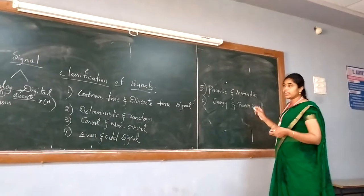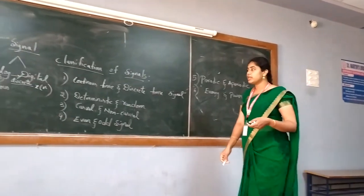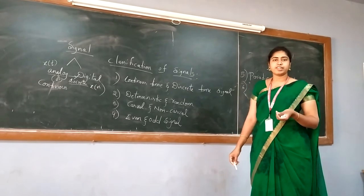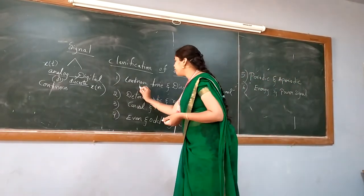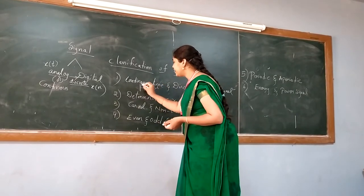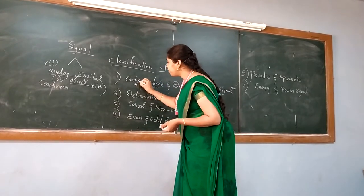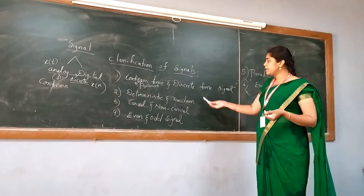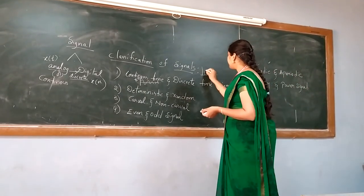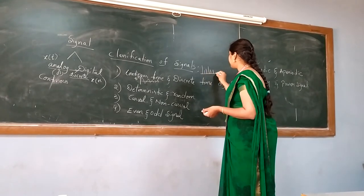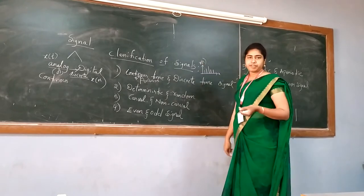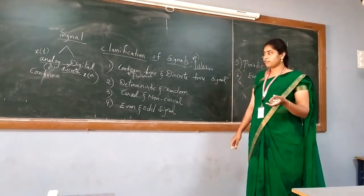These are very important classification of signals — these six types. Continuous time signal is also called as analog signal. Whatever signal you are taking, it will be varying continuously with respect to time. On the X axis you will take T, on the Y axis you will represent the function X of T. When coming to discrete time signal, you can only represent it in the format of samples. That is why on the X axis I will take N, and on the Y axis I will take X of N.